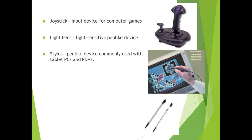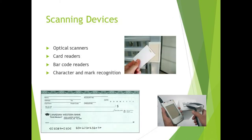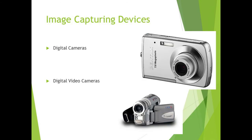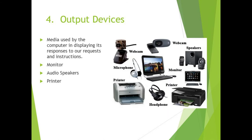Mouse is of two types. One is mechanical — a type of computer mouse that has a rubber and metal ball underneath which rolls in every direction. The other is an optical mouse, which uses a laser for detecting mouse movements. Pointing devices include trackball, track point, touchpad, and touch screen. A stylus is a pen-like device used for drawing and operating touch screens. Other input devices include joystick and light pen.